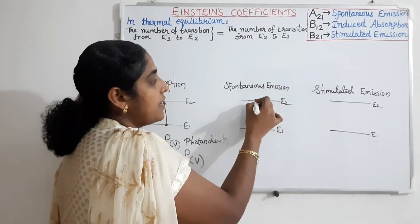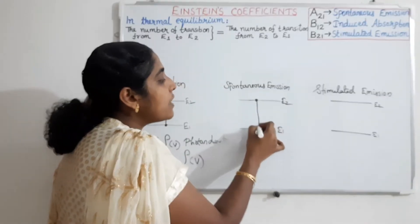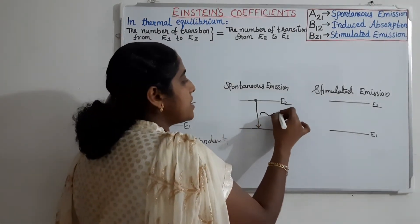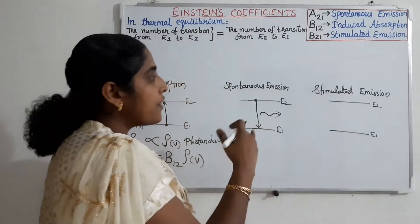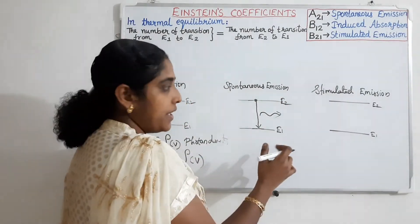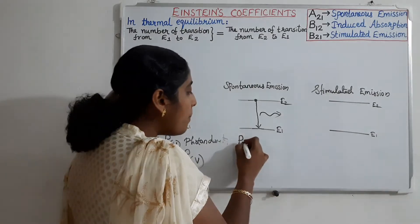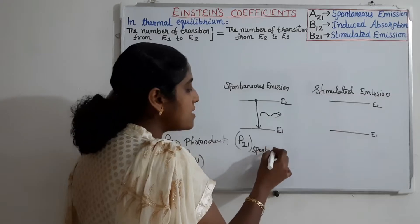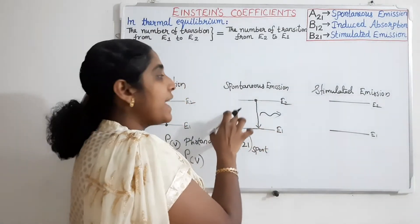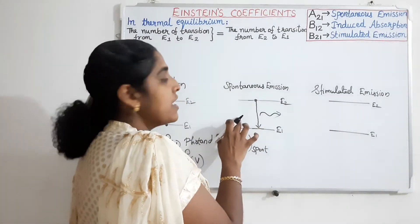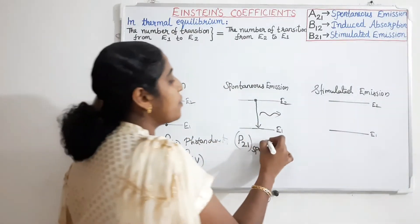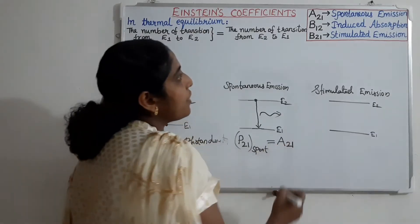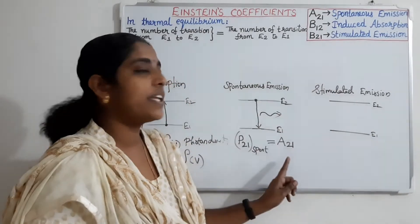In spontaneous emission, an atom in the higher energy level will return back to the ground level by its own. During that emission, a photon is emitted. Since this emission of radiation takes place spontaneously, it is called spontaneous emission. The probability of transition does not depend upon any external agency, so it is not proportional to any photon density — it is equal to a constant. That constant is known as Einstein's coefficient of spontaneous emission, A21.